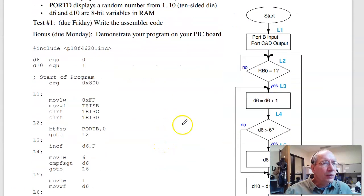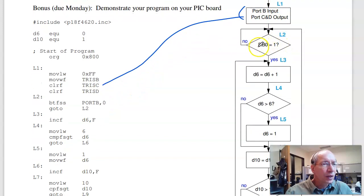The last one is convert to assembly. So this line of code right here is move FF to Tris B, clear Tris C and D. Keep looping, kick out when RB0 is 1. So bit test skip if set. If it's set, I skip out. Otherwise, keep looping.